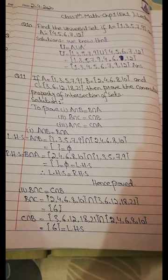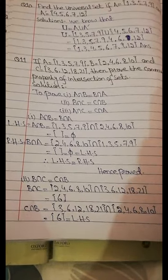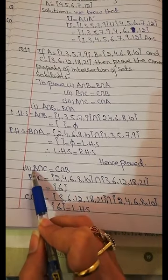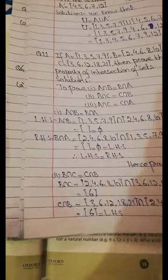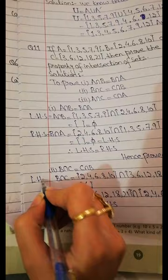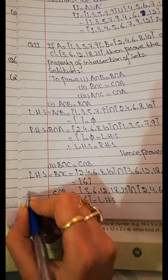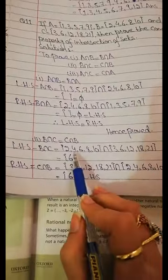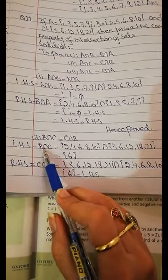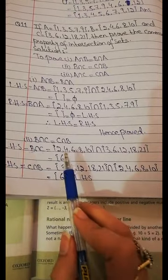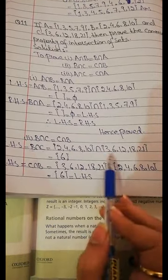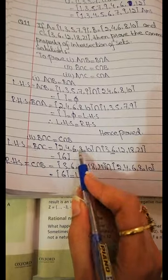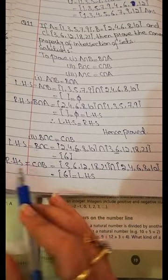Similarly we prove the second and third parts in the same pattern. Second part: B intersection C equals C intersection B. Left-hand side is B intersection C and right-hand side is C intersection B. Looking for common elements: 2 is not common, 4 is not common, but 6 is common in both sets, 8 is not common, 10 is not common. So only one element is common which is 6.